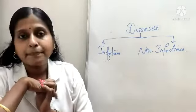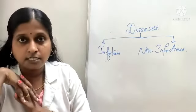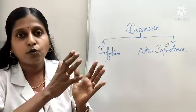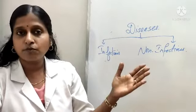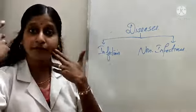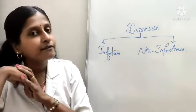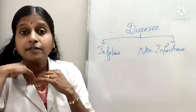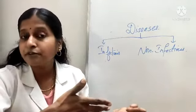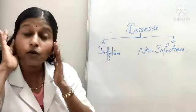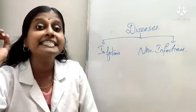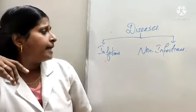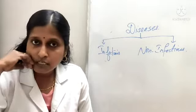For example, infectious diseases: you are having chickenpox and you go to the school, you can spread chickenpox to everyone. You are having corona, you go to the school, you can spread it. Those who are having a weak immune system will get it very easily. You are having common cold, you can spread from one person to another. So these are all called infectious diseases. What is non-infectious disease? How can a disease be non-infectious?